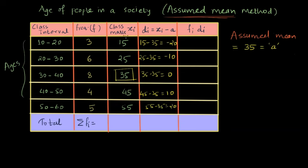Now we are interested in finding fi di. That means the multiplication of the frequency and the respective deviations. So for the first row, we get minus 20 times 3, which is minus 60. And we can complete rest of the rows as follows. We get minus 10 times 6, which is minus 60 again, then zero times 8, which is zero.